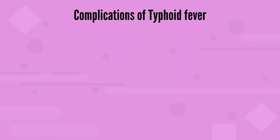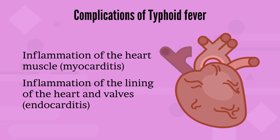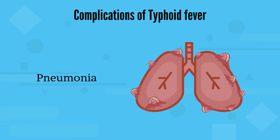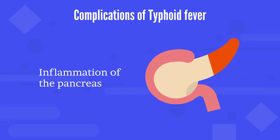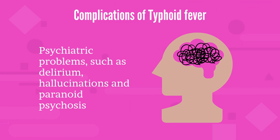Other possible complications include inflammation of the heart muscles, also known as myocarditis. Another complication is inflammation of the lining of the heart and walls, known as endocarditis. The patient may suffer from infection of major blood vessels known as mycotic aneurysm. There can be pneumonia. The patient can suffer from inflammation of the pancreas known as pancreatitis. There can be kidney or bladder infections. Infections and inflammation of membranes and fluid surrounding the brain or spinal cord, known as meningitis, can also be a complication. Lastly, the patient can suffer from psychiatric problems such as delirium, hallucinations, and paranoid psychosis.